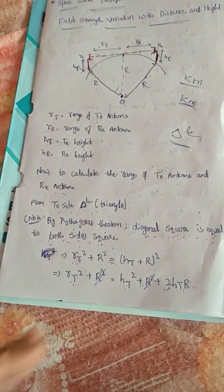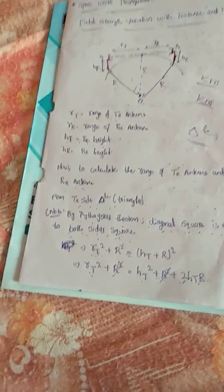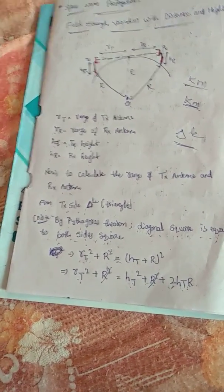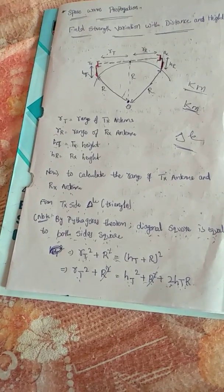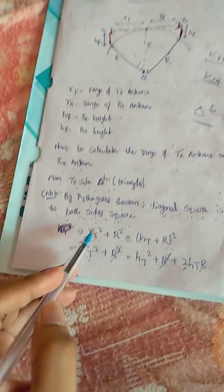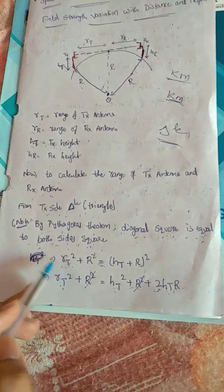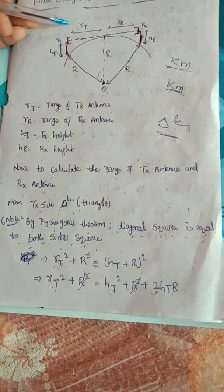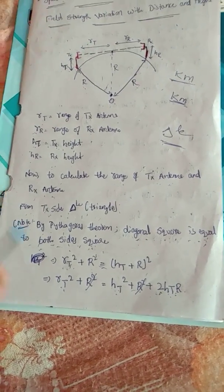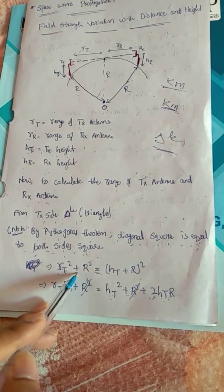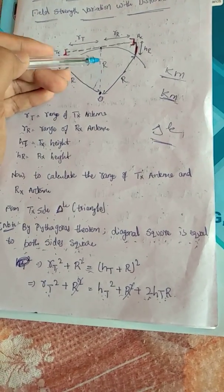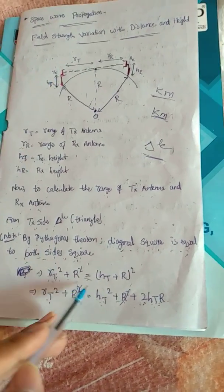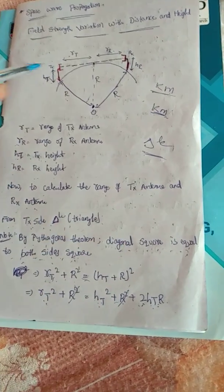By applying this statement, we get the expression: RT squared plus R squared equals the diagonal squared, which gives us (R + HT)² = RT² + R².